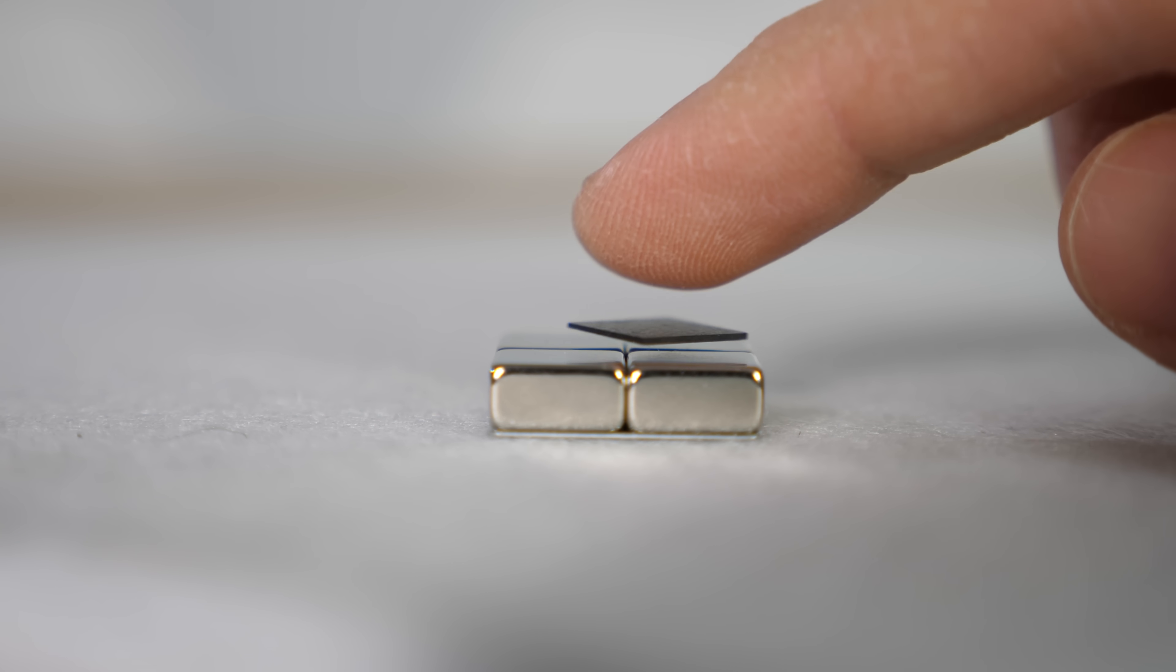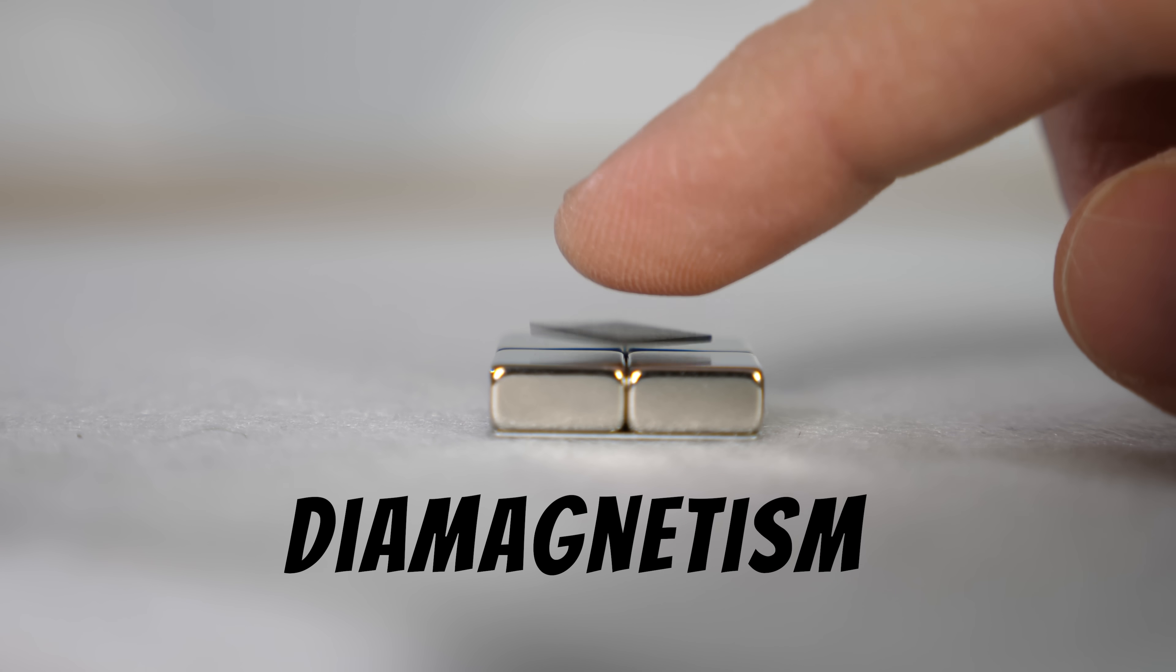This type of magnetism is called diamagnetism, and it's the same effect that caused the magnet to levitate on the bismuth crystals that I showed you. In fact, diamagnetism is the most common type of magnetism. Every material on earth has it, even water.